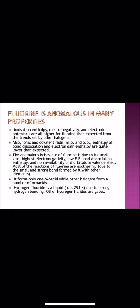Also ionic and covalent radii, melting and boiling point, enthalpy of bond dissociation and electron gain enthalpy are quite lower than expected. The anomalous behavior of fluorine is due to its small size, high electronegativity, low F-F bond dissociation enthalpy and non-availability of d orbitals in valence shell. Most of the reactions of fluorine are exothermic due to small size and strong bond formed by it with other elements. It forms only one oxoacid while other halogens form a number of oxoacids.